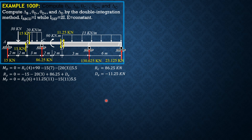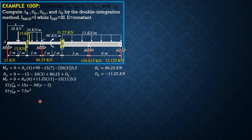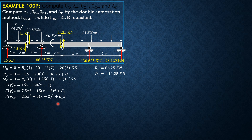We now establish the differential equation of the elastic curve for portion AB, with the origin at A. EI y-double-prime AB equals 15x minus 30 times (x minus 2). Integrating once: EI y-prime AB equals 7.5x squared minus 15(x minus 2) squared plus C1. Note there is no C2 because when x is 0, deflection at A is 0. Integrating again: EI y-AB equals 2.5x cubed minus 5(x minus 2) cubed plus C1·x.